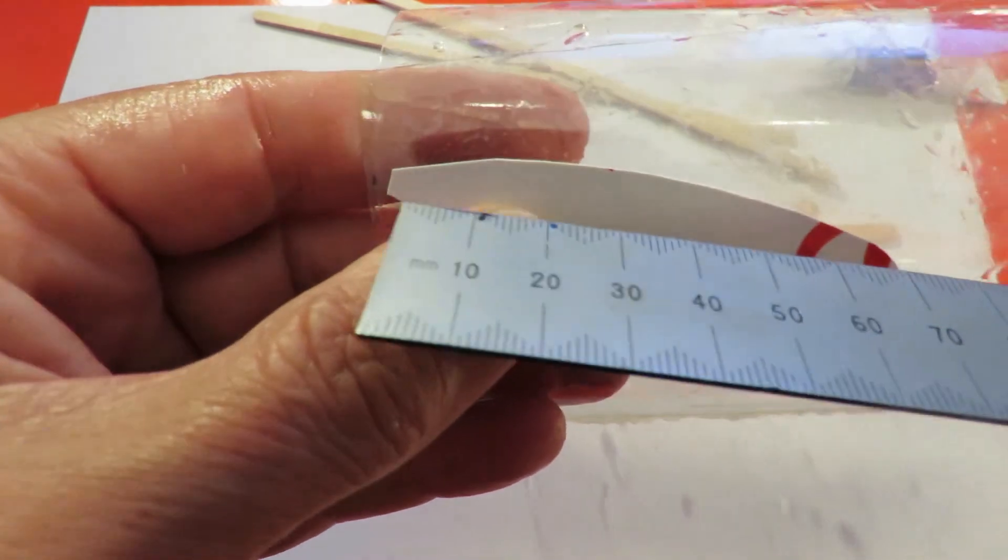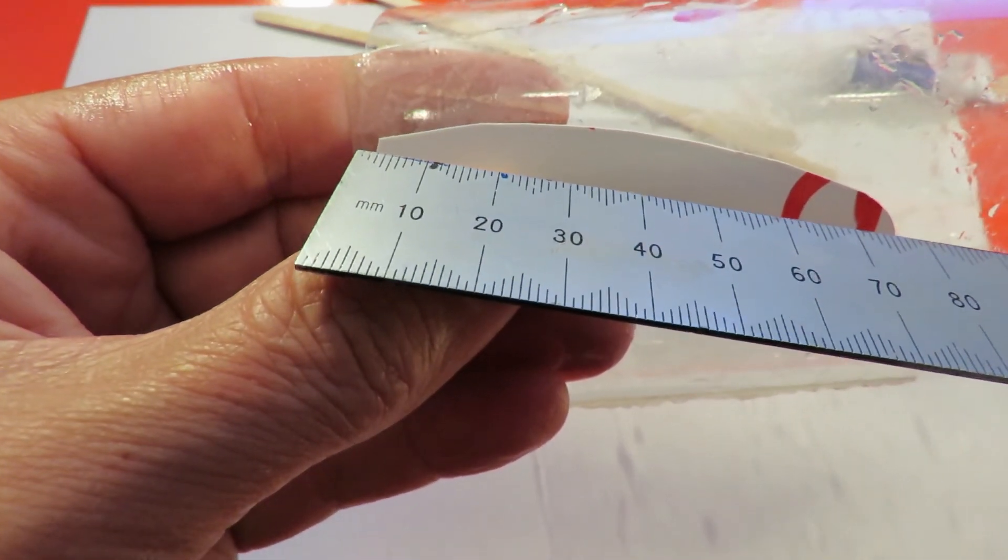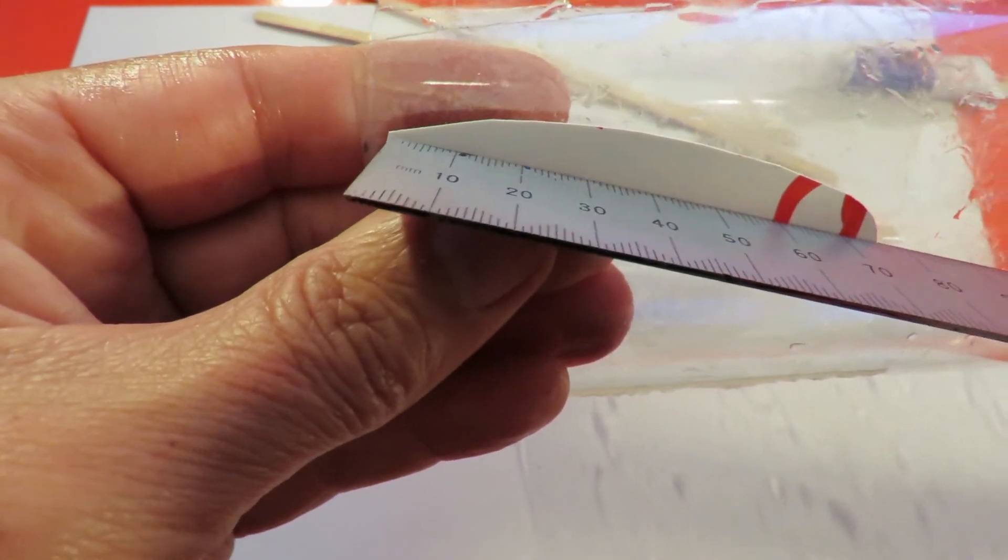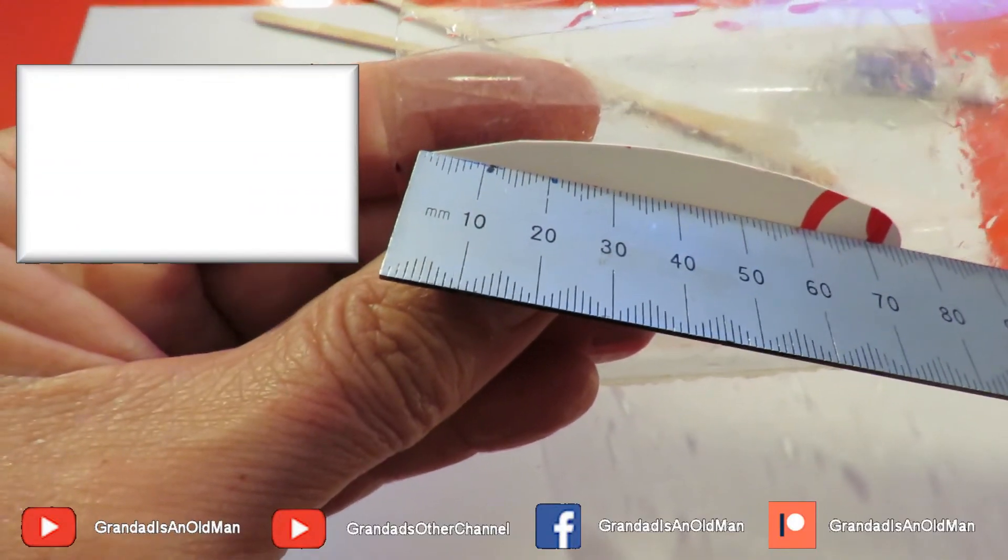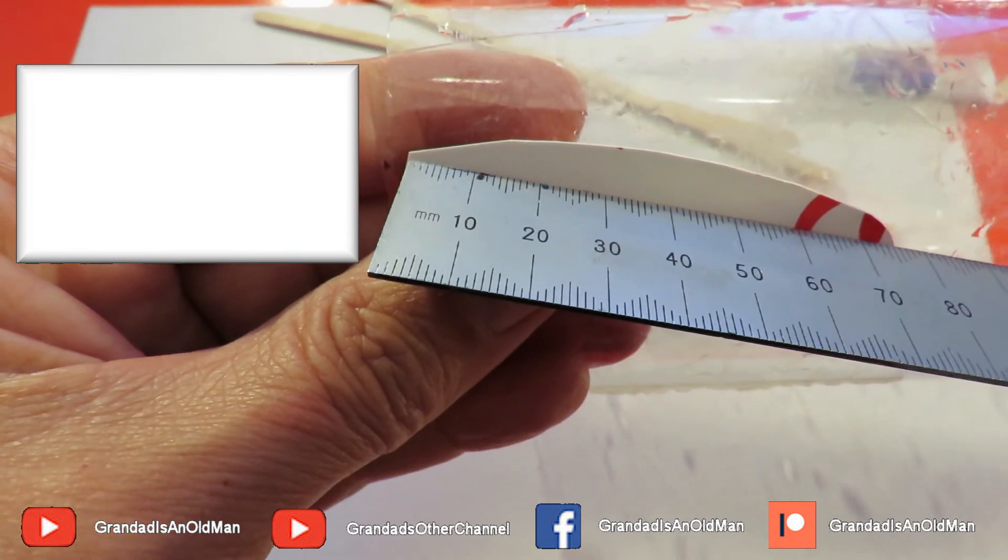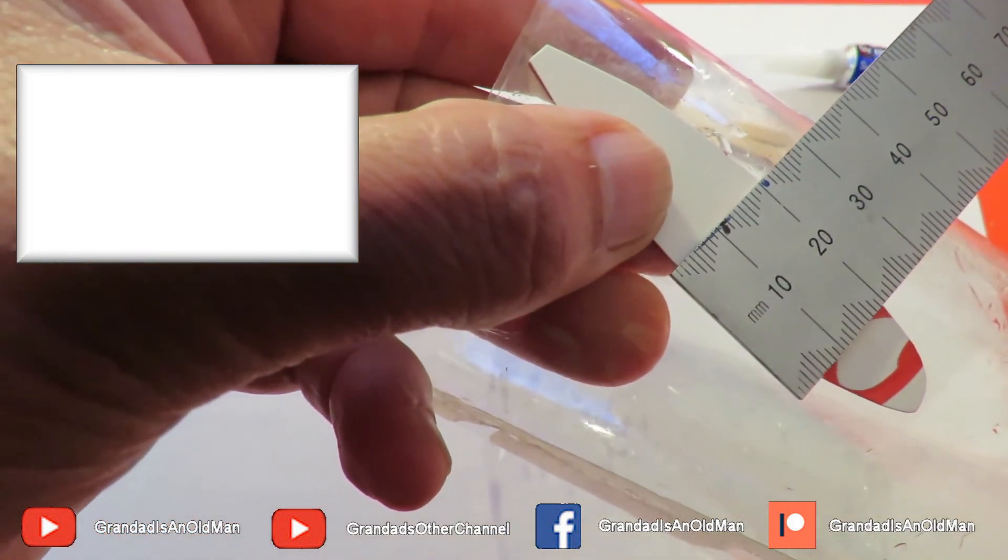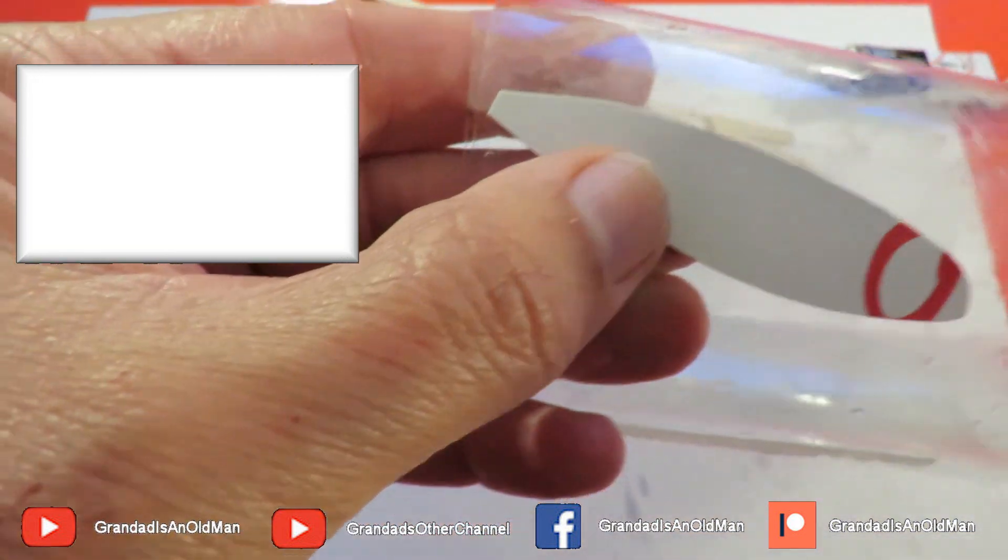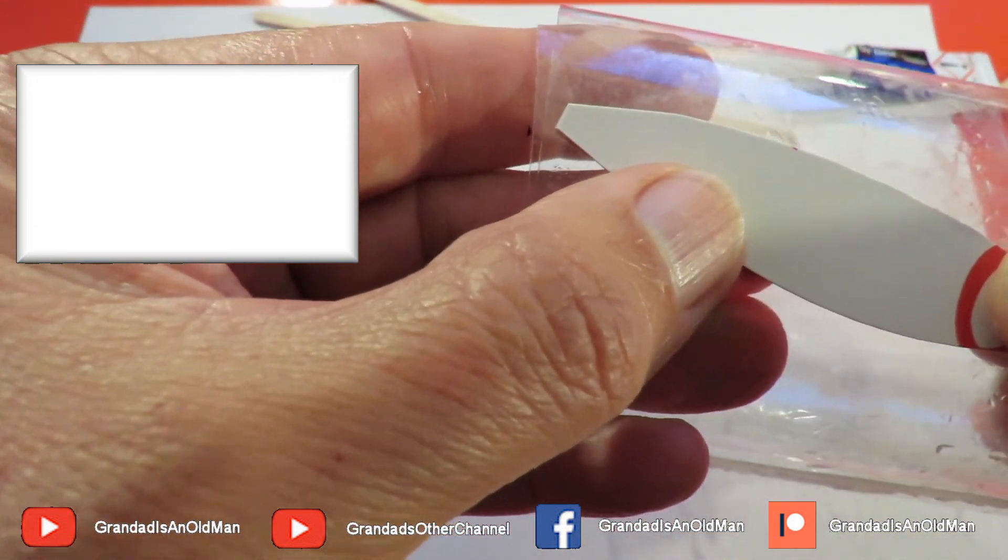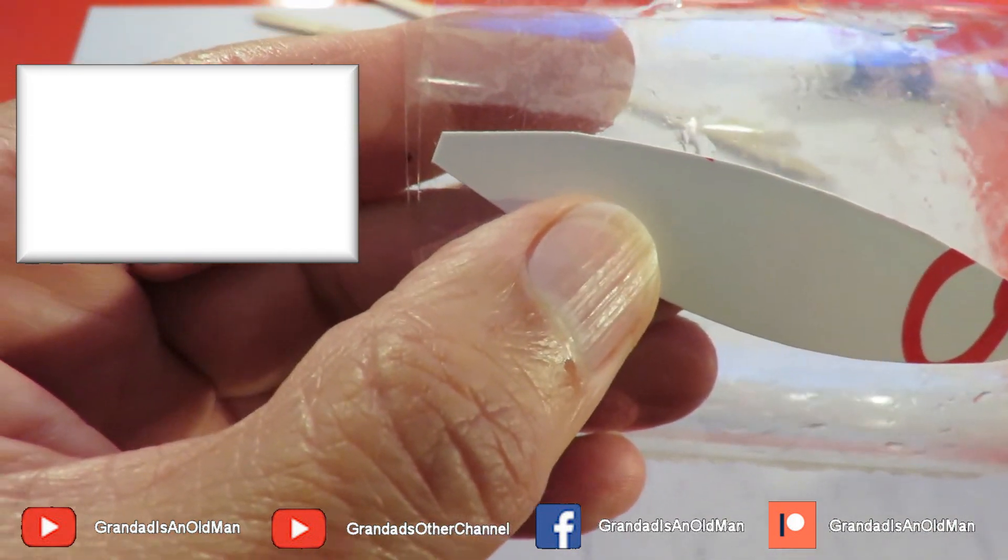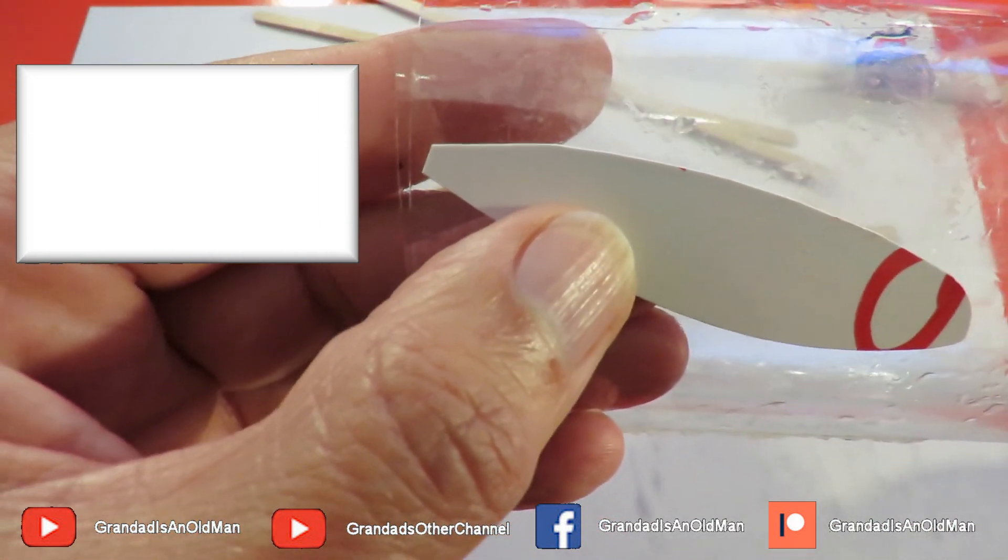I'm not going to put a plan or a diagram out, but that one's about 75mm long, about 20 wide at its widest point. So I'll cut that and then we'll glue it or tape it to that propeller that we're making.